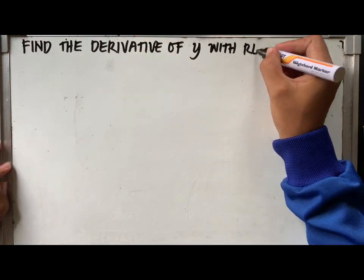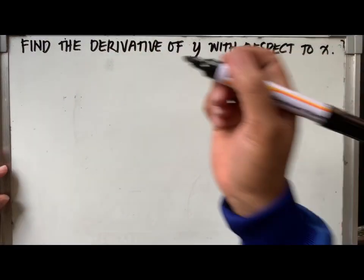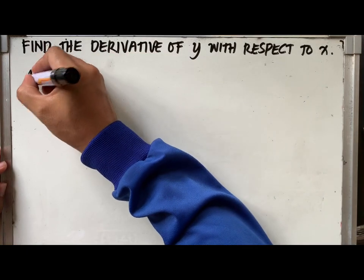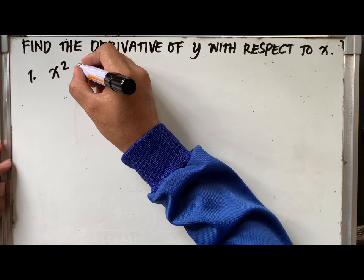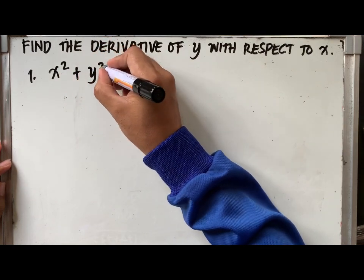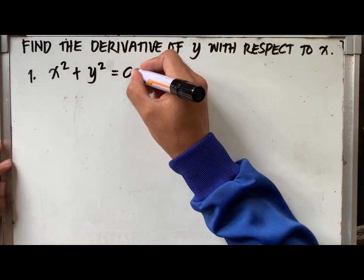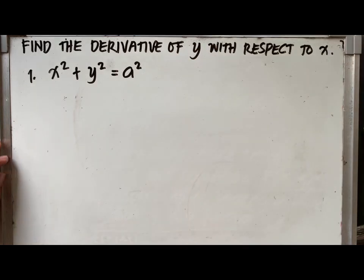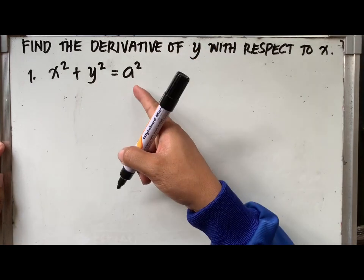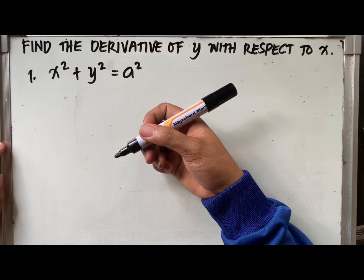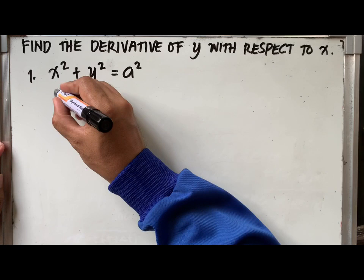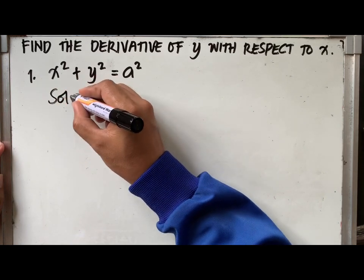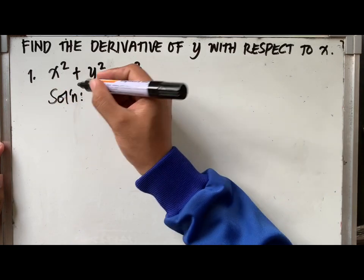Find the derivative of y with respect to x. Or solve for y prime of x squared plus y squared equal to a squared. So take note that a here is a constant. Again, the rule states that, differentiate each term with respect to x, bearing in mind that y is a function of x.